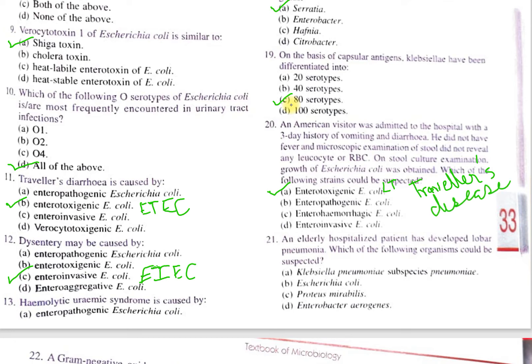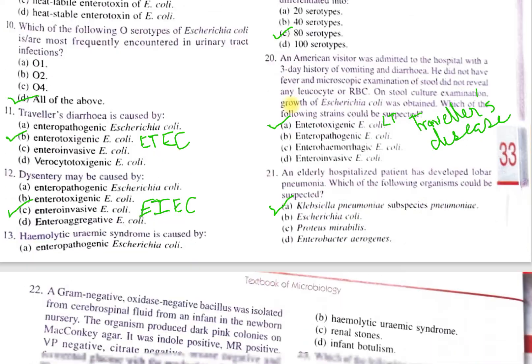Question 21: an elderly hospitalized patient has developed lobar pneumonia. Which organism could be suspected? A. Klebsiella pneumoniae subspecies pneumoniae, B. Escherichia coli, C. Proteus mirabilis, D. Enterobacter aerogenes. The correct option is A, Klebsiella pneumoniae subspecies pneumoniae.